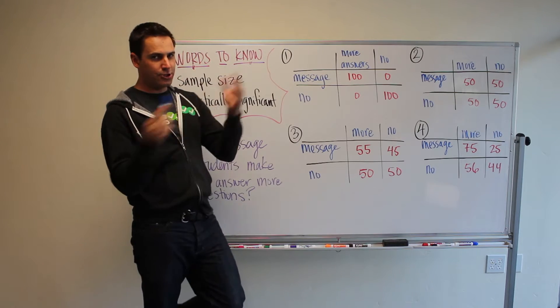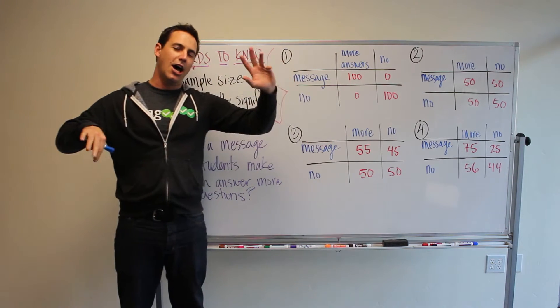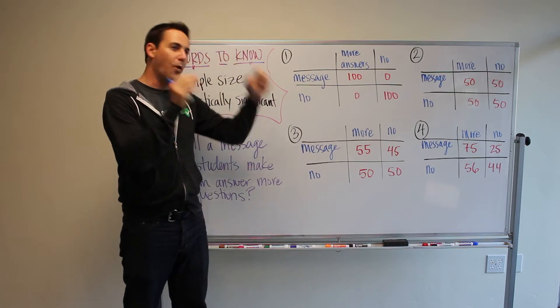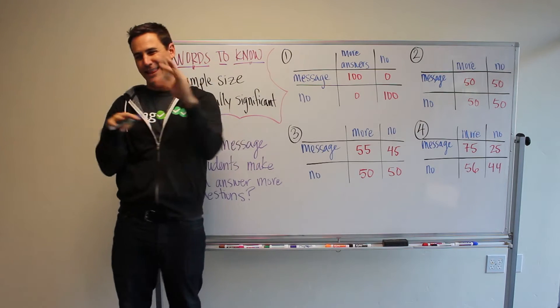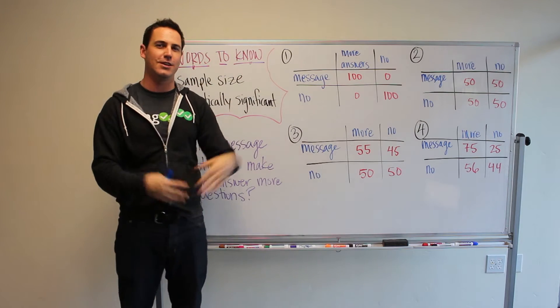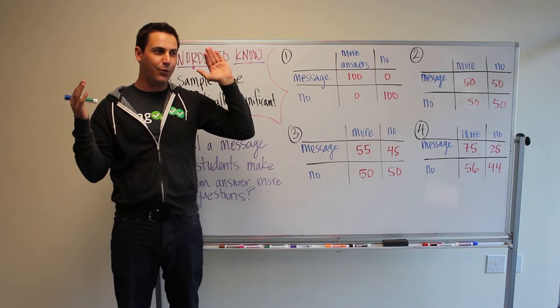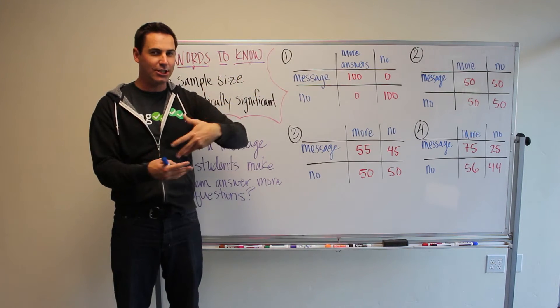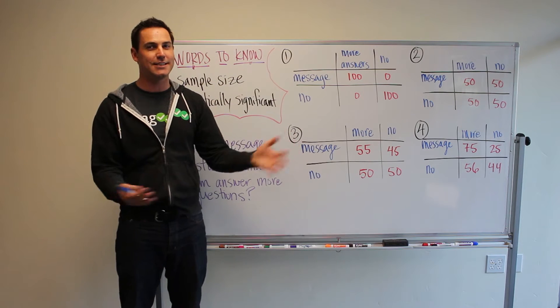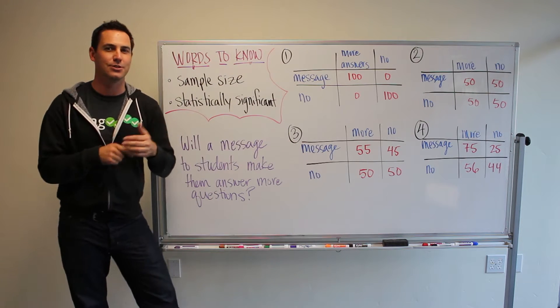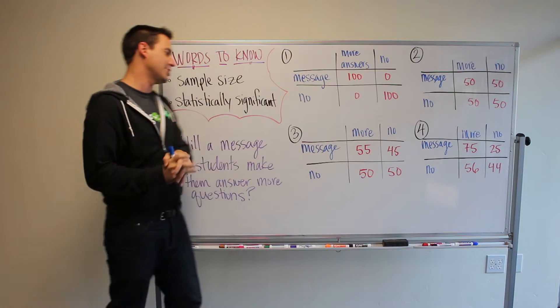And you choose 200 students and you decide to give one group a message and the other group not a message. And you keep everything else the same. And the idea is to see if the message actually increases the chances that one of those groups or the group that gets the message answer the question.